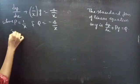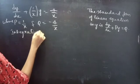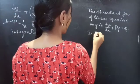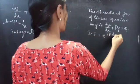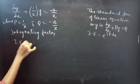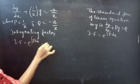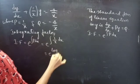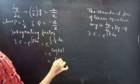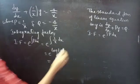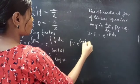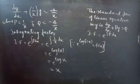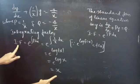Now, we need to find the integrating factor. We know that the integrating factor of a linear equation in y is given by IF = e^(∫P dx). Using this formula: IF = e^(∫(1/x) dx) = e^(log|x|). Since e^(log f(x)) = f(x), we get the integrating factor equals x.